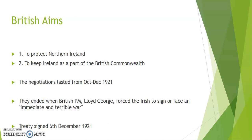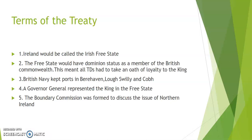Finally Lloyd George issued an ultimatum: accept the following terms or there would be a terrible and immediate war. The British Commonwealth is an association of countries consisting of the UK and its colonies. Under these terms Ireland would be called the Free State — not a republic but part of the British Commonwealth, known as Dominion Status, meaning it was a self-governing country within the Commonwealth where the King was still Head of State. TDs would have to take an oath of loyalty to the King. The British Navy would have three key naval ports in Ireland at Lough Swilly, Cobh and Bearhaven. A Governor General was to be the King's representative in the Free State, and a Boundary Commission was formed to discuss the divide between Northern Ireland and the Irish Free State.